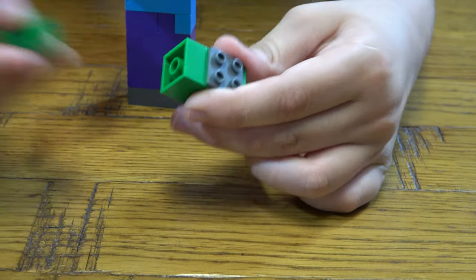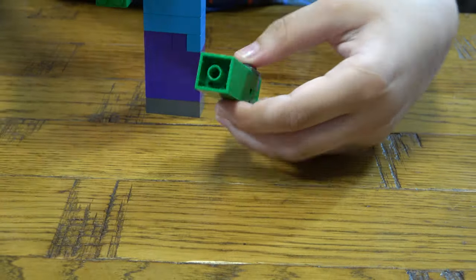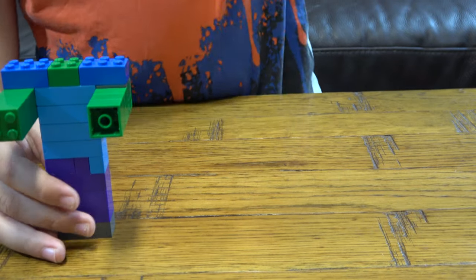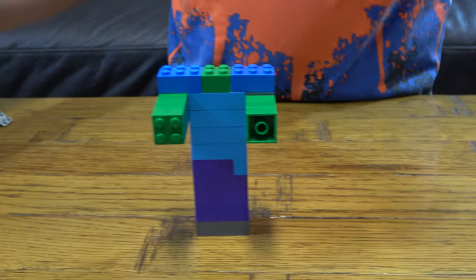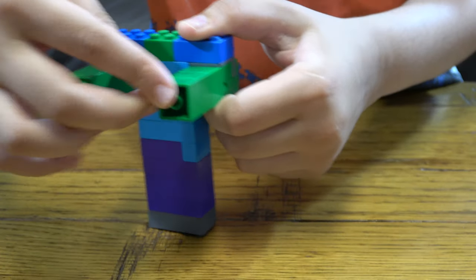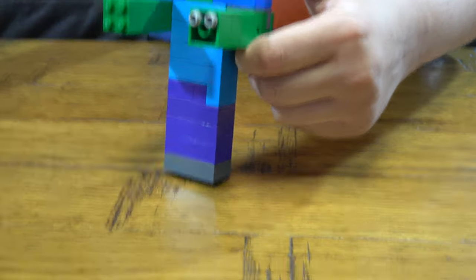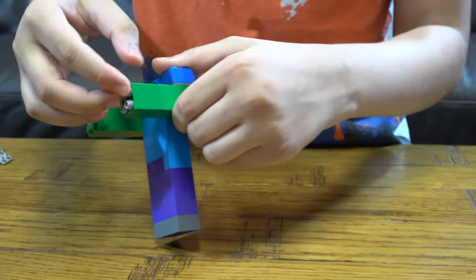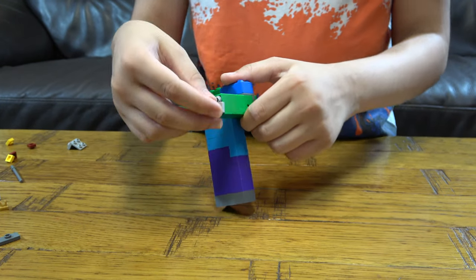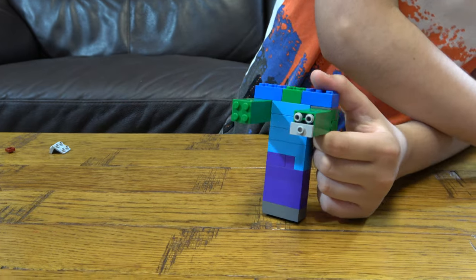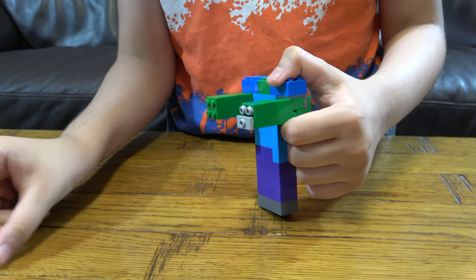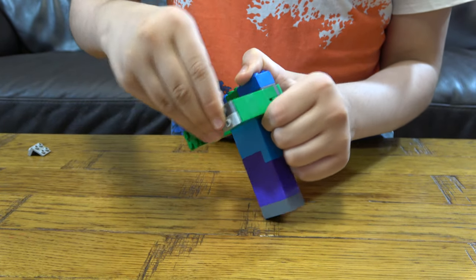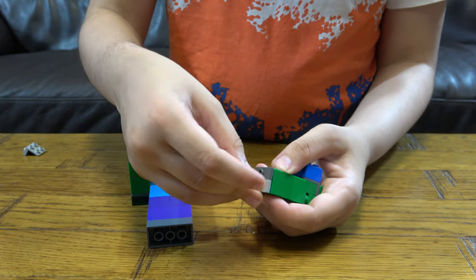Instead I'm gonna place three on this one like that. Then we're gonna get four of these, one, two, three, four. Then we also need these two like that. I put this here.